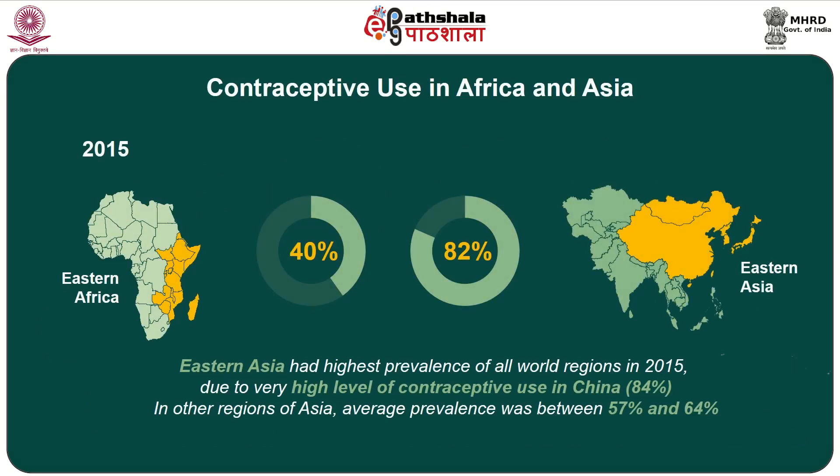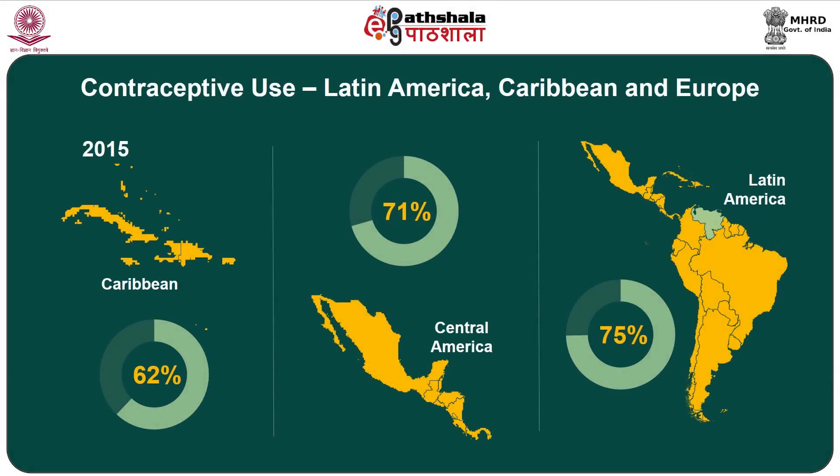However, contraceptive use has been increasing recently in Eastern Africa and now stands at 40 percent. Eastern Asia had the highest prevalence of all world regions in 2015 at 82 percent, primarily due to the very high level of contraceptive use in China at 84 percent. In other regions of Asia, the average prevalence was between 57 and 64 percent. China thus contributed immensely towards the much higher prevalence rate of contraception in Eastern Asia.